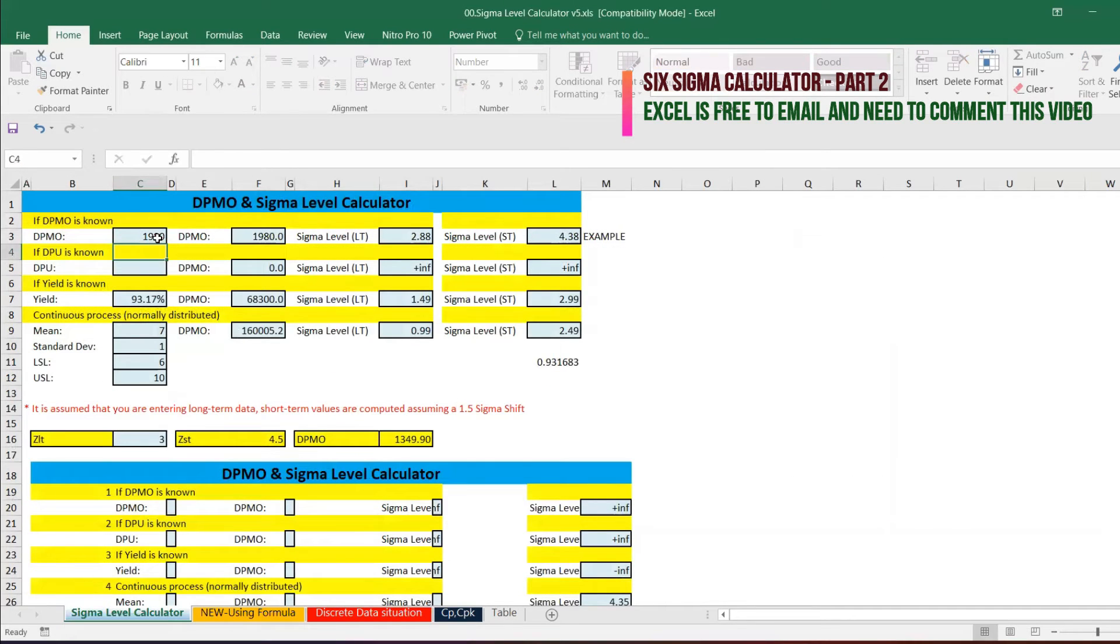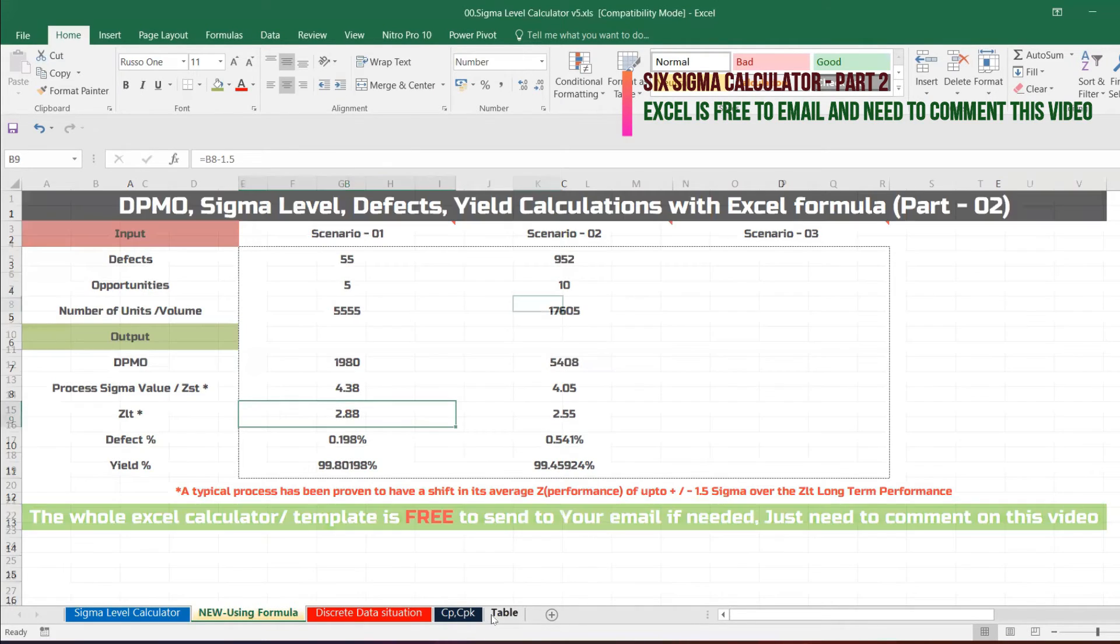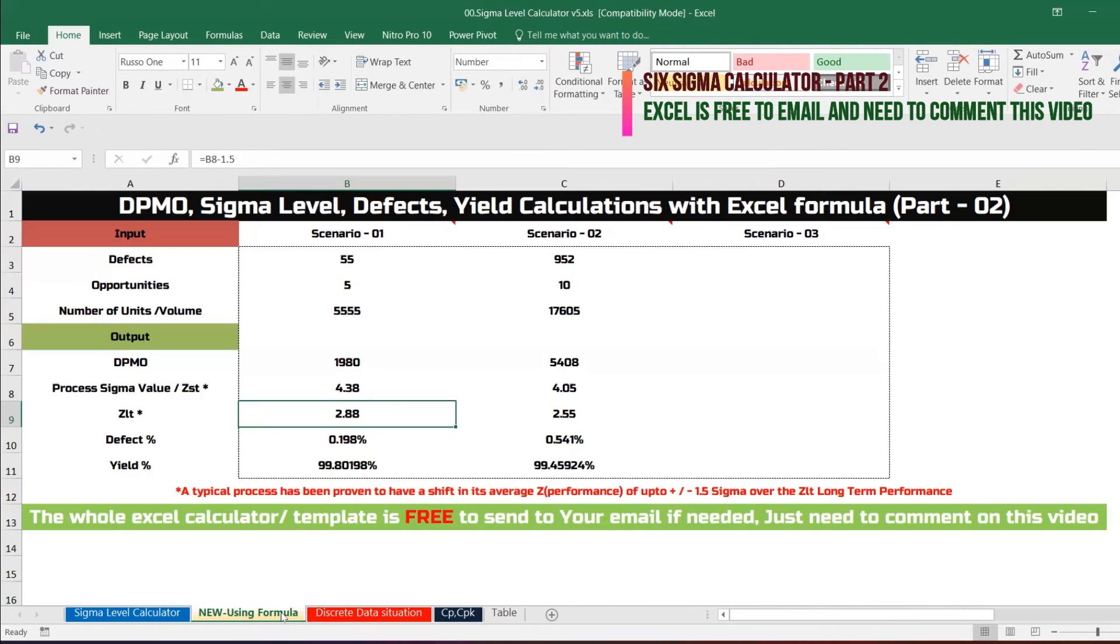2.88 is long term, short term is 4.38, exactly the same value we have got. Even if you can use conventional table, you can also verify your answer. 1980, so it comes between 4.4. You can see here 4.418. It's supposed to be around 4.3 and 4.4, exactly the same.